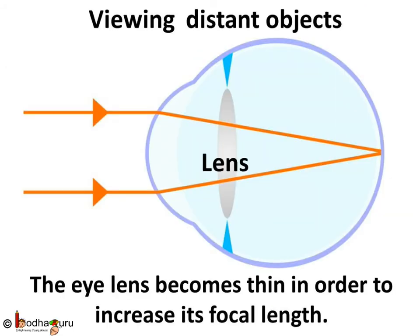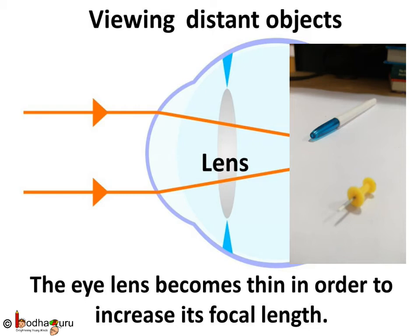When the muscles are relaxed, the lens becomes thin. Thus, its focal length increases, and this enables us to see distant objects clearly.